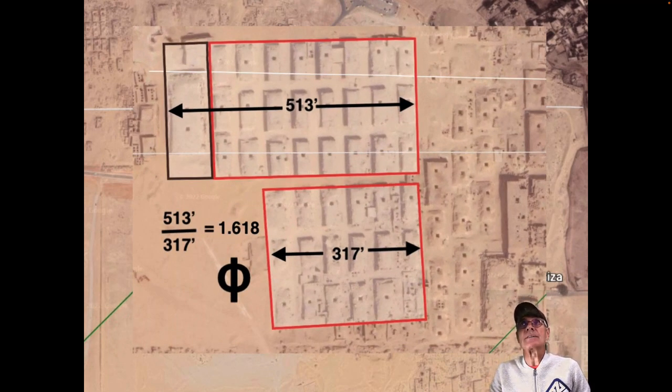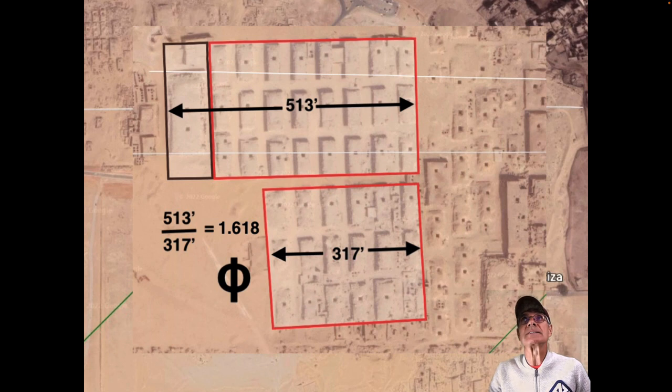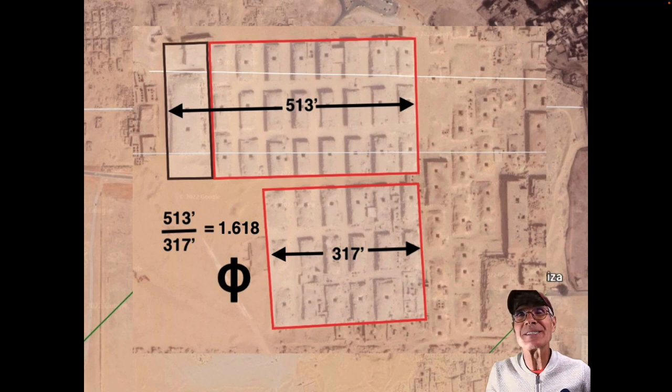You can see there's two sections of tombs basically here, and that the 513 feet of the upper tombs over the 317 feet of the lower grouping of tombs comes exactly to 1.618. That's the Phi proportion. So you've got Phi hidden in the way these tombs are arranged here.